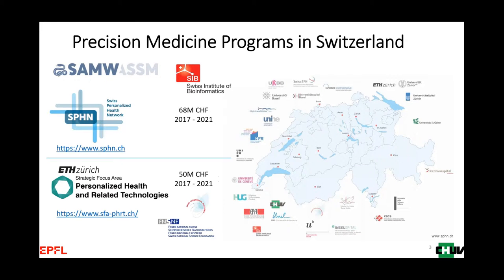A few years ago, the Swiss Federal Government decided to allocate substantial funding for a precision medicine program called SPHN, the Swiss Personalized Health Network. In parallel, the two Federal Institutes of Technology — ETH in Zurich and EPFL in Lausanne — also allocated substantial funding as a companion project, so that both the university hospitals and the Federal Institutes of Technology could participate in this endeavor.